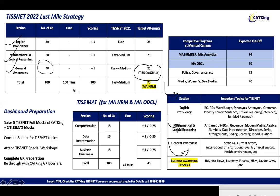Next comes TISMAT, which has to be given only by people who qualify from TISNET for the TISS MA-HRM and MA-ODCL programs. The TISMAT paper has 15 questions in each of three sections: Comprehension, Data Interpretation, and Business Awareness — so 45 questions, 45 minutes, and 45 marks total. There is negative marking here, so you have to make sure you're attempting wisely. Business Awareness has questions on business news, economy, finance, HRM, and labor laws.